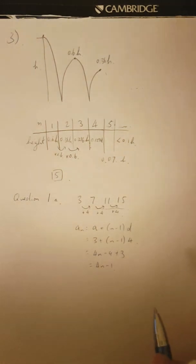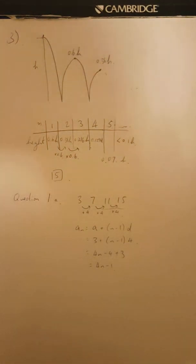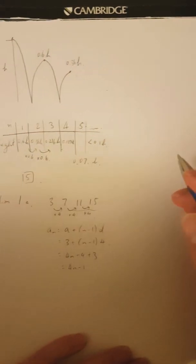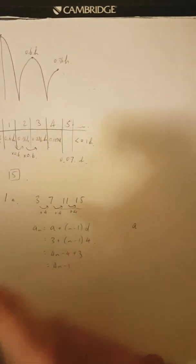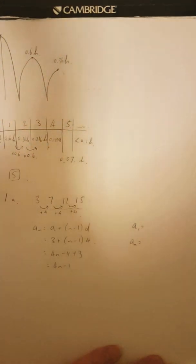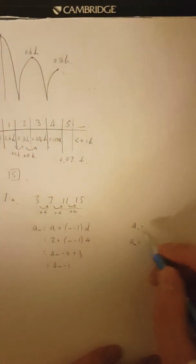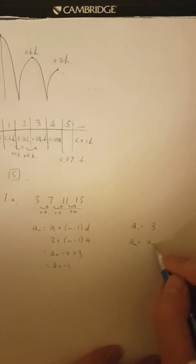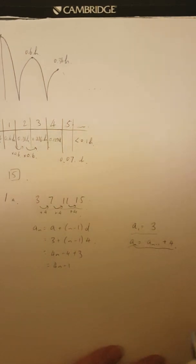You can leave it like this if you want, but I would prefer that you simplify. Once you simplify, you get 4N minus 4 plus 3, which gives you 4N minus 1. For the recursive form, you actually need two parts. The first part is what the initial value is, and then how the Nth value relates to the previous N minus one value. So the first value is 3, and then A_N is the previous one plus four.